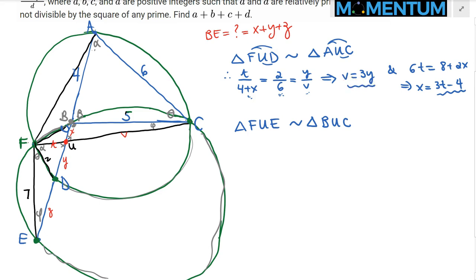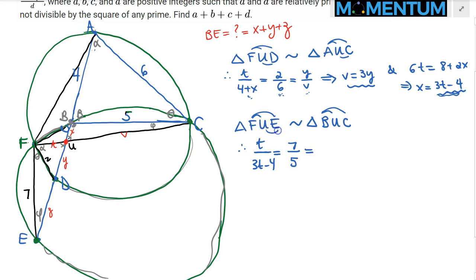Applying the second similarity FUE ~ BUC: FU/BU = FE/BC = UE/UC, giving t/x = 7/5 = (y+z)/(3y). We can substitute x = 3t − 4 into t/x = 7/5 to get a relation between t and the other variables.